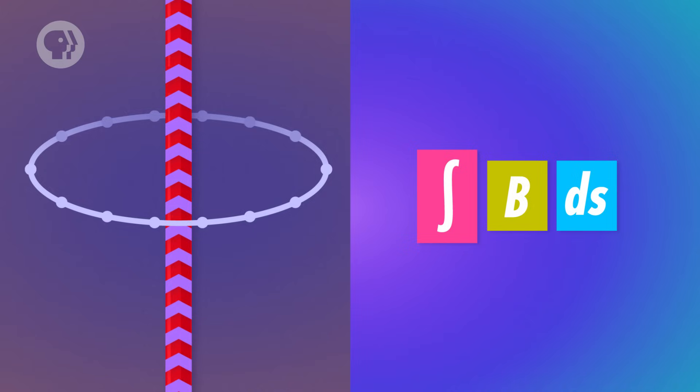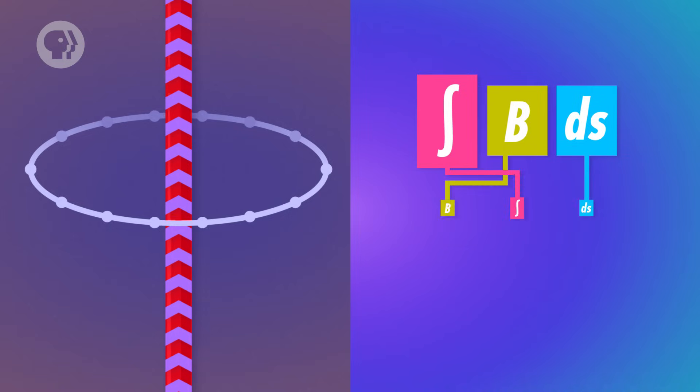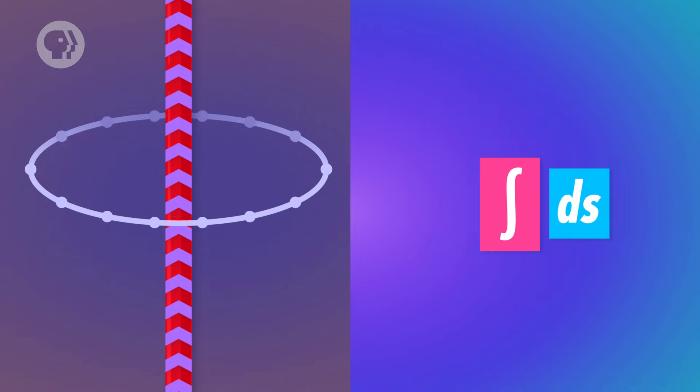But every part of the circle is the exact same distance from the wire, so the magnetic field will be the same at every point. In other words, B is constant, so we can move it in front of the integral sign. Now all we have to do is figure out the integral of all the points along the circle, which is equal to the circumference of the circle, so 2 times pi times the radius.